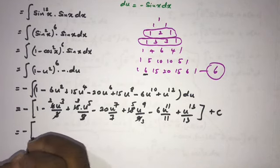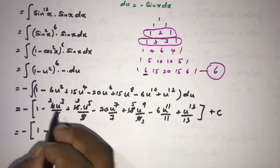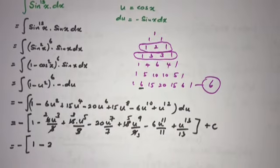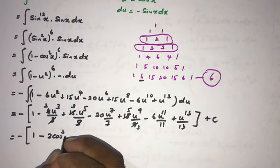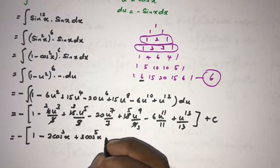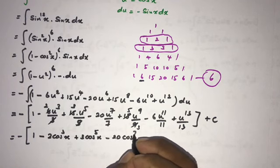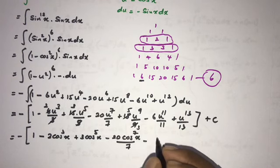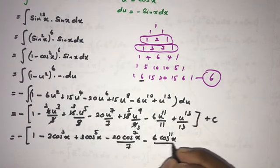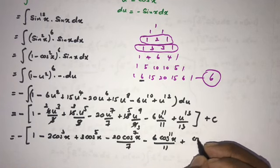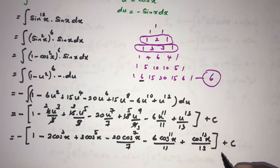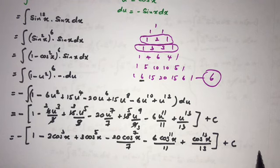Now we substitute back u equals cosine of x. The final answer is: minus cosine x plus 2 cosine cubed x minus 3 cosine to the fifth power of x plus 20 cosine to the seventh power of x over 7 minus 5 cosine to the ninth power of x over 3 plus 6 cosine to the eleventh power of x over 11 minus cosine to the thirteenth power of x over 13, plus C. We are done! If you like this video, please subscribe to this channel. Thank you for watching.